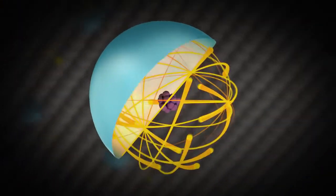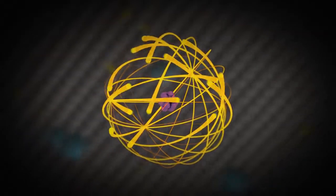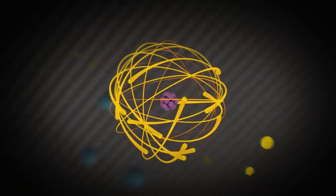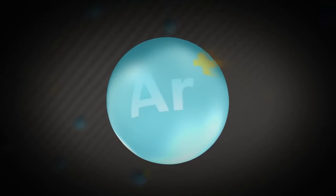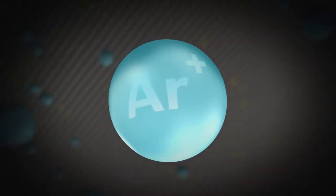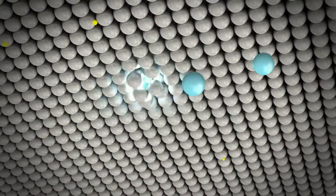The positively charged argon ions are continuously generated by electrons hitting the argon atoms. The sputtering target is negatively charged. Therefore, the argon ions are attracted towards its surface.